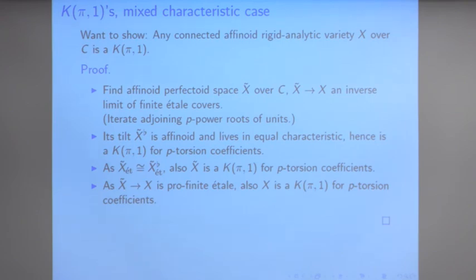The question was whether the fact that we always get degeneration at E_1 of the Hodge–de Rham spectral sequence indicates that rigid analytic varieties are not sufficiently rich. I think they are not as rich as complex manifolds, but let's not overstate that. Thank you very much.